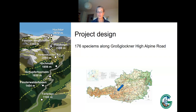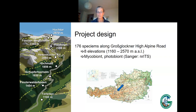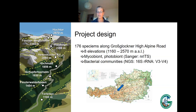We selected eight study areas along the elevation gradient with a length of about 1,400 meters. We amplified the nuclear ITS of the micro- and photobionts and the 16S V3-V4 region, a classical region for estimating microbial community diversity.